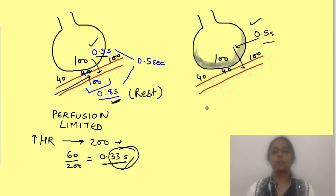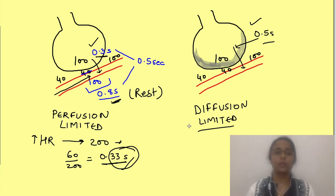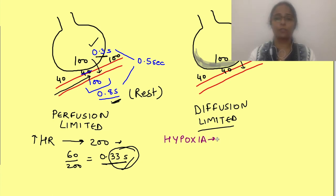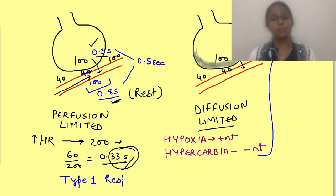In this case, perfusion is not the limitation — the rate of diffusion becomes the limiting factor. This is known as being diffusion-limited. In disease conditions, the diffusion of oxygen becomes diffusion-limited rather than perfusion-limited. What about carbon dioxide? Since carbon dioxide diffuses much faster, its diffusion will not be limited. Even with increased respiratory membrane thickness, carbon dioxide can still be expelled from the body. That is why in severe cases of respiratory membrane thickening, such as pulmonary fibrosis, hypoxia occurs but carbon dioxide retention does not. This results in type 1 respiratory failure, where hypoxia is present but hypercarbia (elevated CO₂) is not seen.